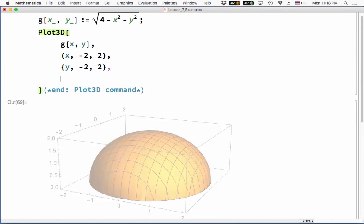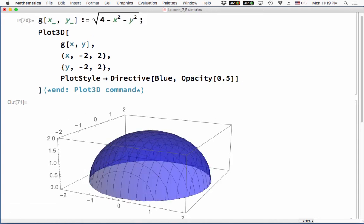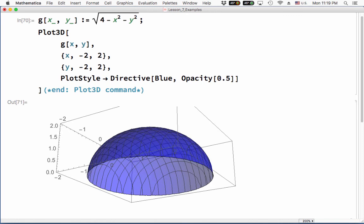Let's go ahead and change the plot style. So we'll say plot style and we'll do directive. Each plot has its own directive. You can think about these like its own attributes, the way that we want it to be. I usually like blue. That's been the style in these videos. And then we'll also do opacity. Let's do 50% opacity so we can see through it a little bit. And then we can turn off the mesh if you'd like. But there's that one.